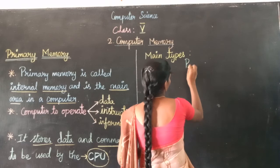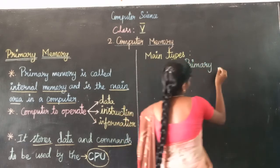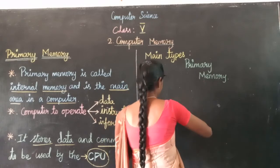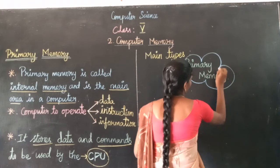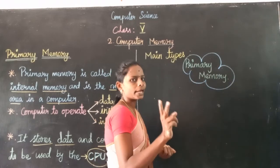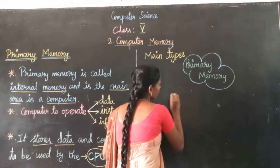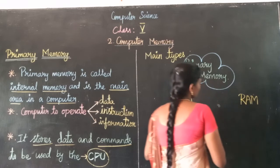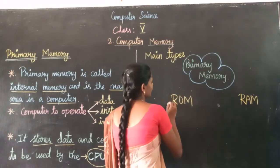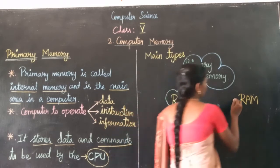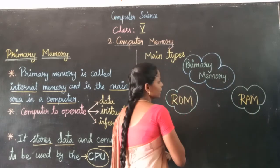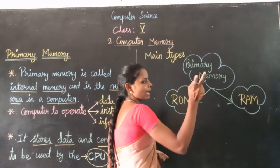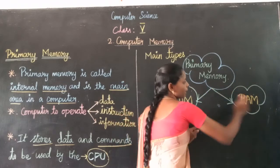Primary memory is classified into two main types: ROM and RAM. In primary memory, two main types can be used by the CPU — first one is ROM, and second one is RAM.